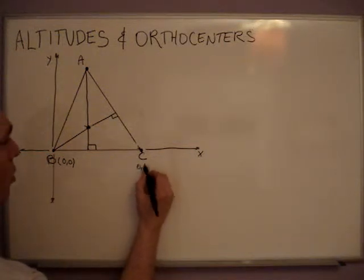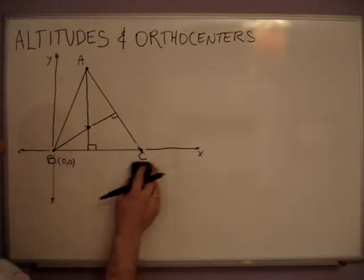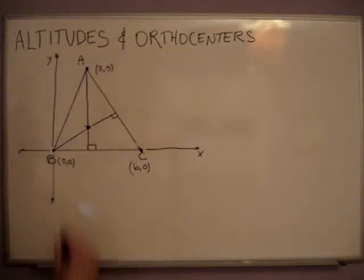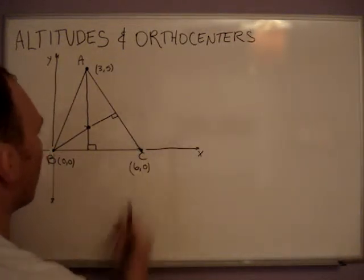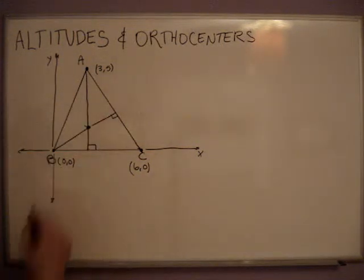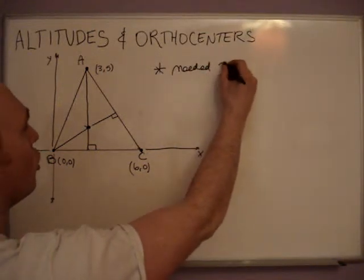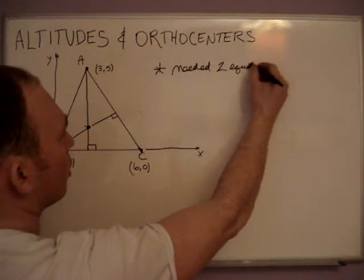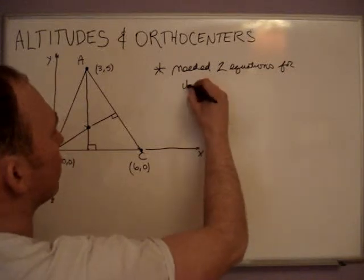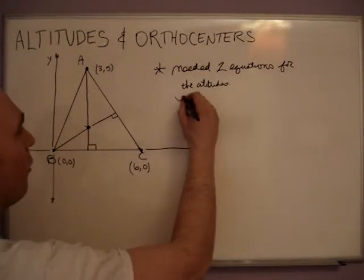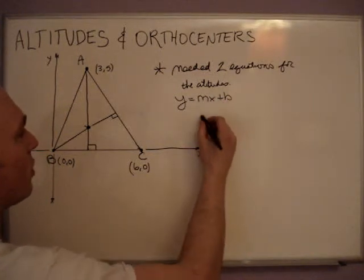This is the origin here, so 0,0 is at B. We'll make this one 6,0, and this one is going to be 3,5. Now what we need to do—the question is going to be stated something like, here's three points, which you're going to have to graph them, and where is the orthocenter for this particular triangle? Now in order to find the orthocenter, this is a must, we must need two equations for the altitudes. So we need equations of the line in the following form, y equals mx plus b, which is slope-intercept form.